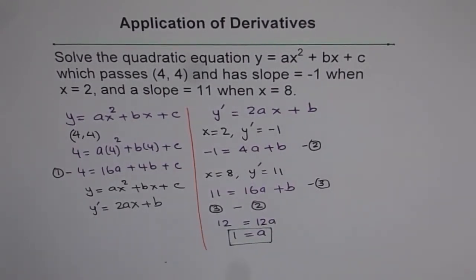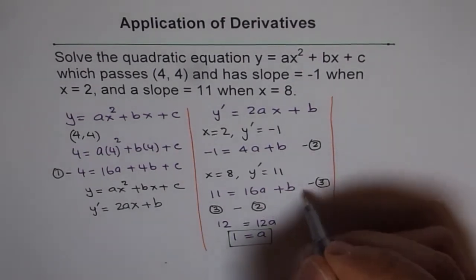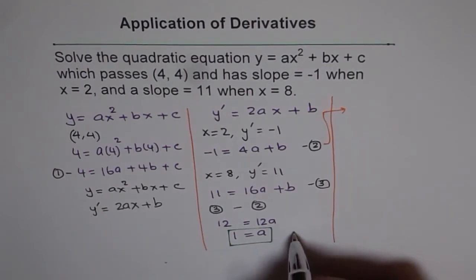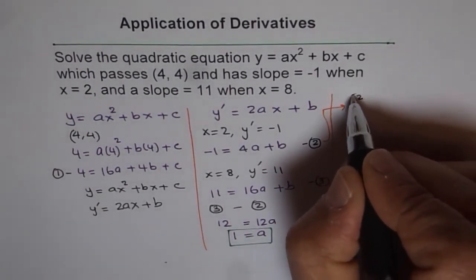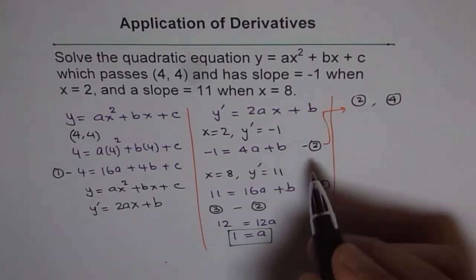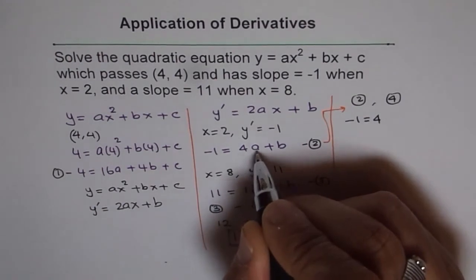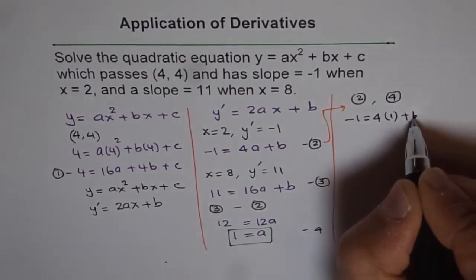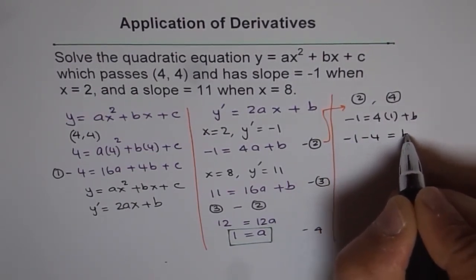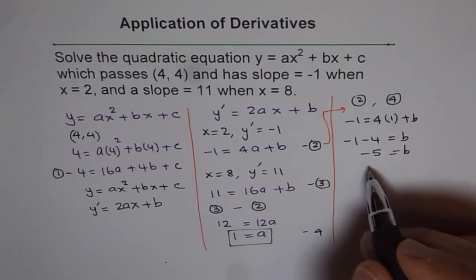Once we have a, we can find b from Equation 2. We substitute a equals 1 into Equation 2: minus 1 equals 4 times 1 plus b, so minus 1 minus 4 equals b, giving us b equals minus 5.